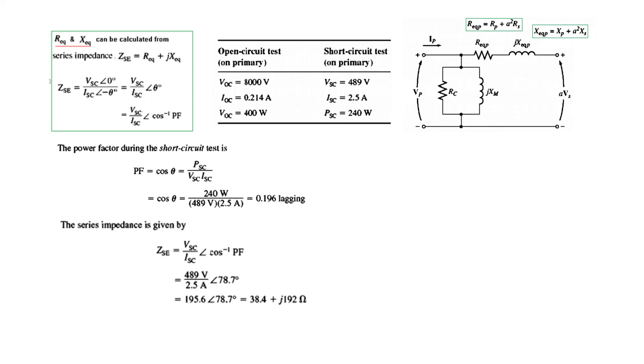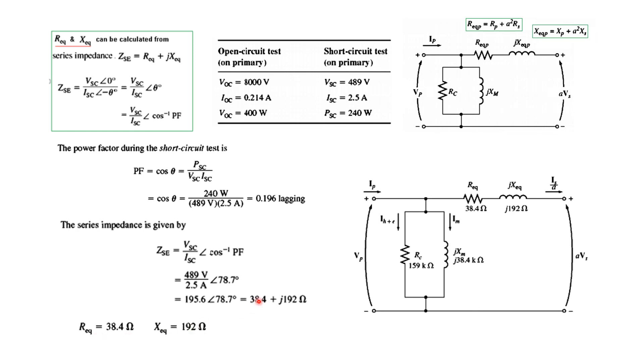And now we will find ZSC by using this formula. So ZSC is VSC over ISC cos inverse power factor. And plugging in the values. This power factor when we plug in, take cos inverse, it will be 78.7. So when we convert the value into a rectangular form, we get these two. And this is the real part and this is the imaginary part. And so we can say that the real part is equal to this one, the R equivalent is equal to 38.4. And X equivalent is equal to the imaginary part 192.